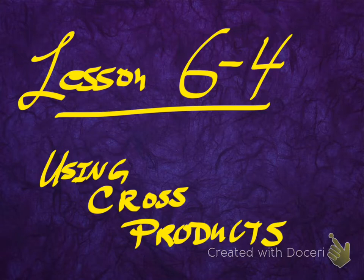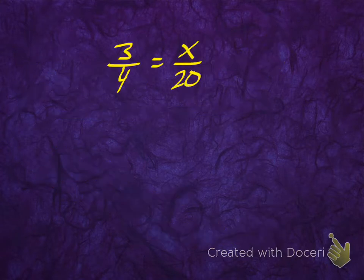We've already got a sneak peek of this. Really, if you looked in your book in Lesson 6-3, they mostly did the arrow method of solving and dealing with proportions. Today, we're just going to focus on cross-products.